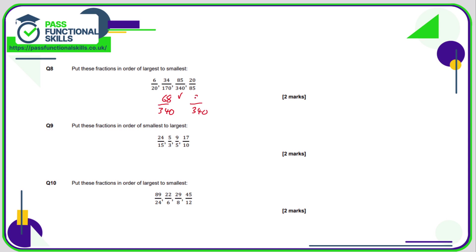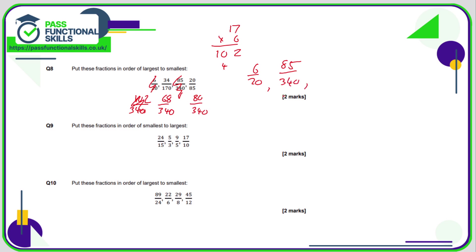20 out of 85 is the same as 80 out of 340, multiplying both by 4. 2 times 17 is 34, so 20 times 17 is 340, meaning we multiply 6 by 17: 17 times 6 is 102. Now comparing the top numbers — 102, 68, 85, and 80 — the biggest is 102 over 340, which was originally six twentieths. Then 85 over 340, then 80 over 340 (originally 20 over 85), and finally 34 over 170.